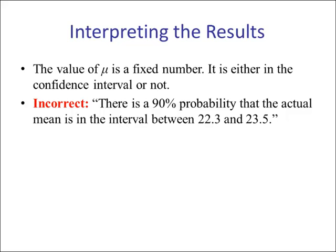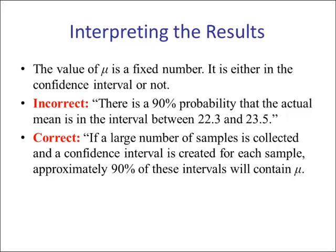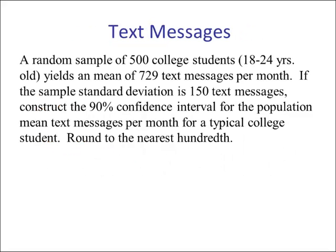It is incorrect to say there is a 90% probability that an actual mean is in the interval between 22.3 and 23.5. What is correct: if a large number of samples is collected and a confidence interval is created for each sample, approximately 90% of those intervals will contain mu. The problem is we don't know whether our specific confidence interval really contains the population mean, which is why we talk about it in terms of probability.